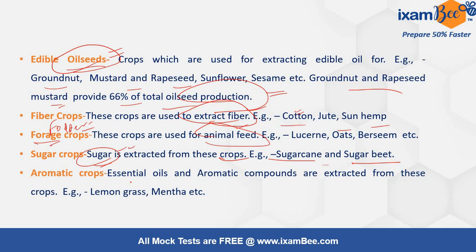Aromatic crops are those from which essential oils and aromatic compounds are extracted. Examples include lemongrass, mentha, and citronella. So aromatic crops are those from which you get essential oils.